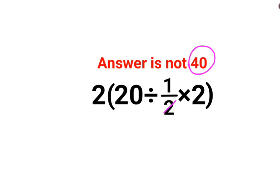A lot of people thought that this and this gets cancelled. So basically you are left with 20 divided by 1, the whole getting multiplied by 2. So that becomes 20 into 2 that gets you 40. And divide by 1 is nothing but just 20. So 20 into 2 gets you 40.